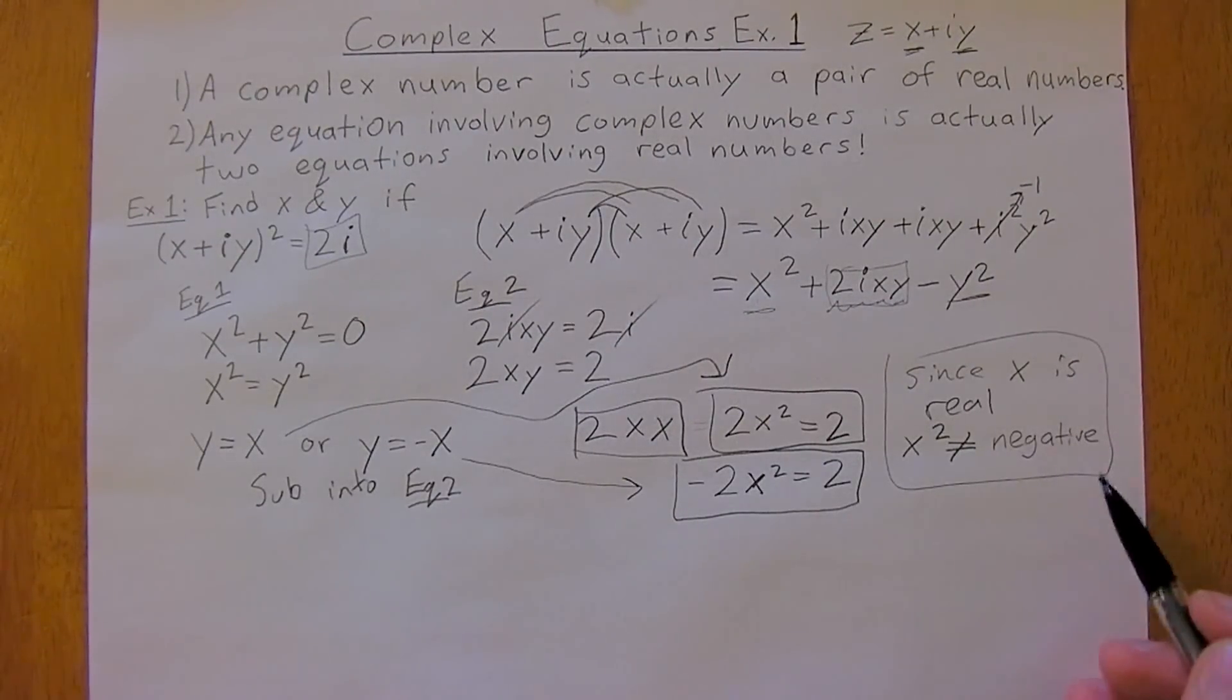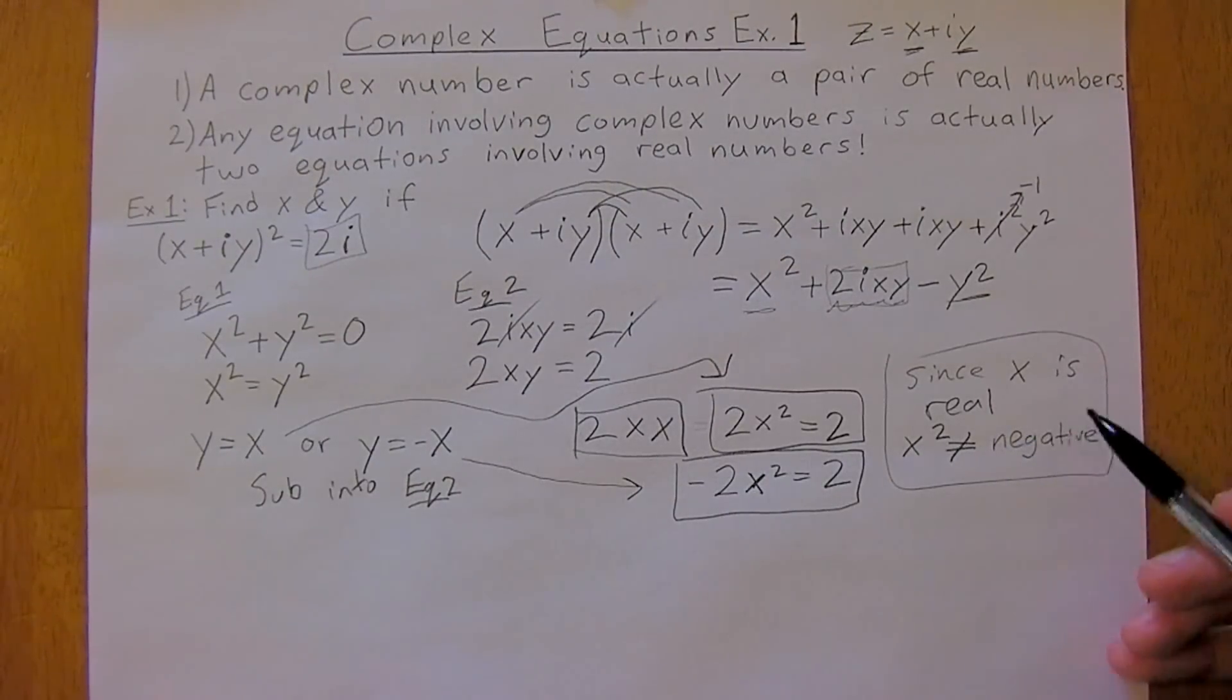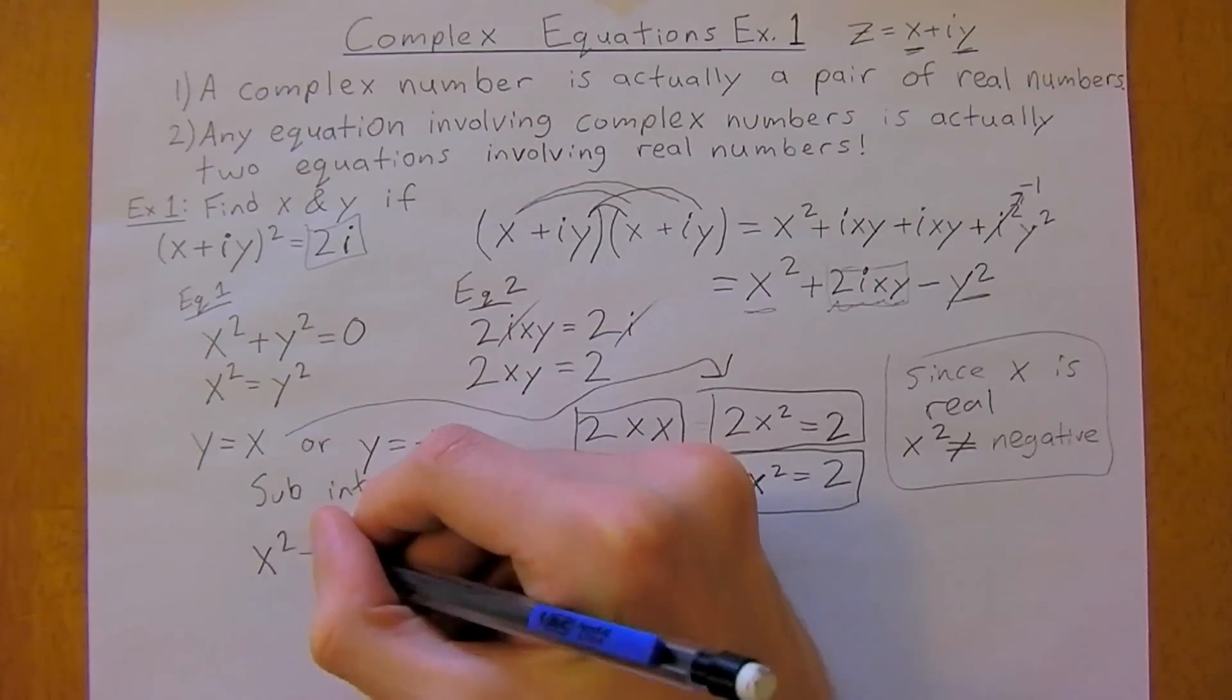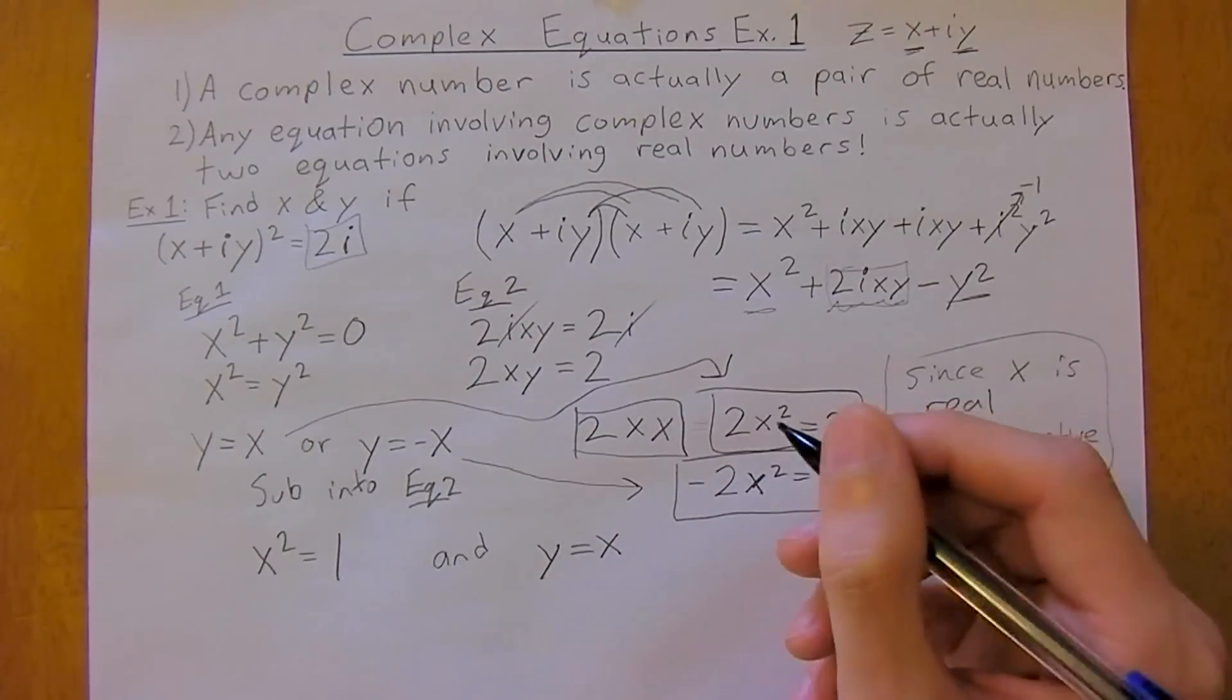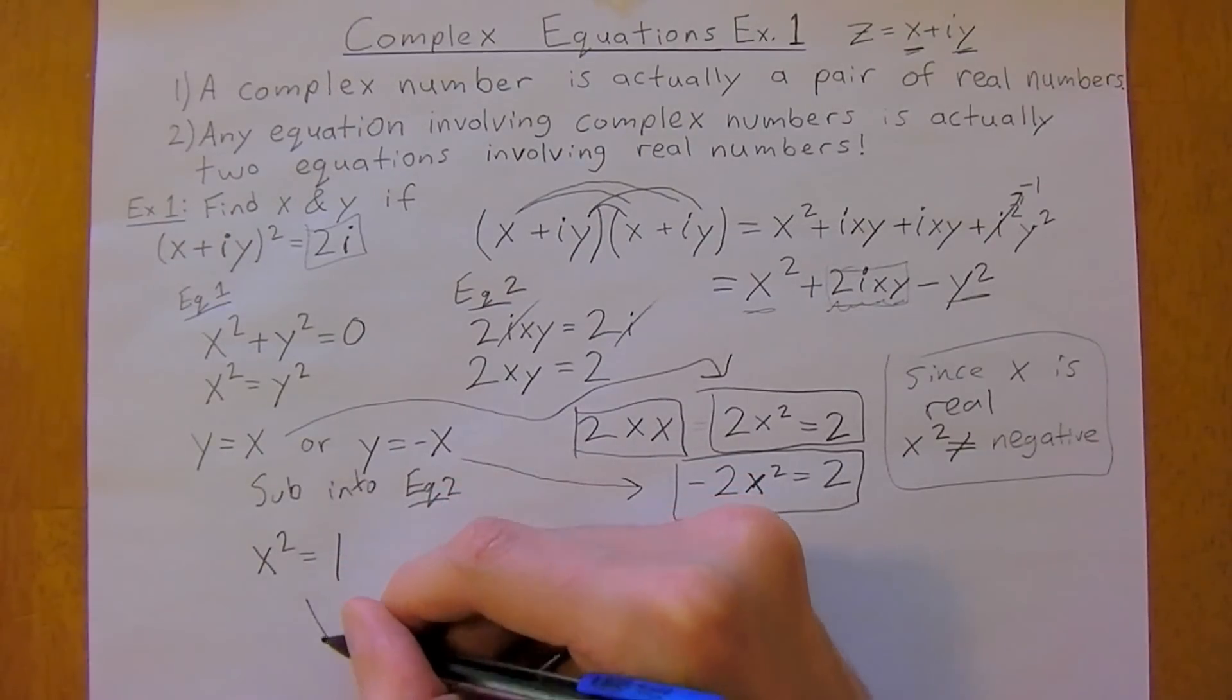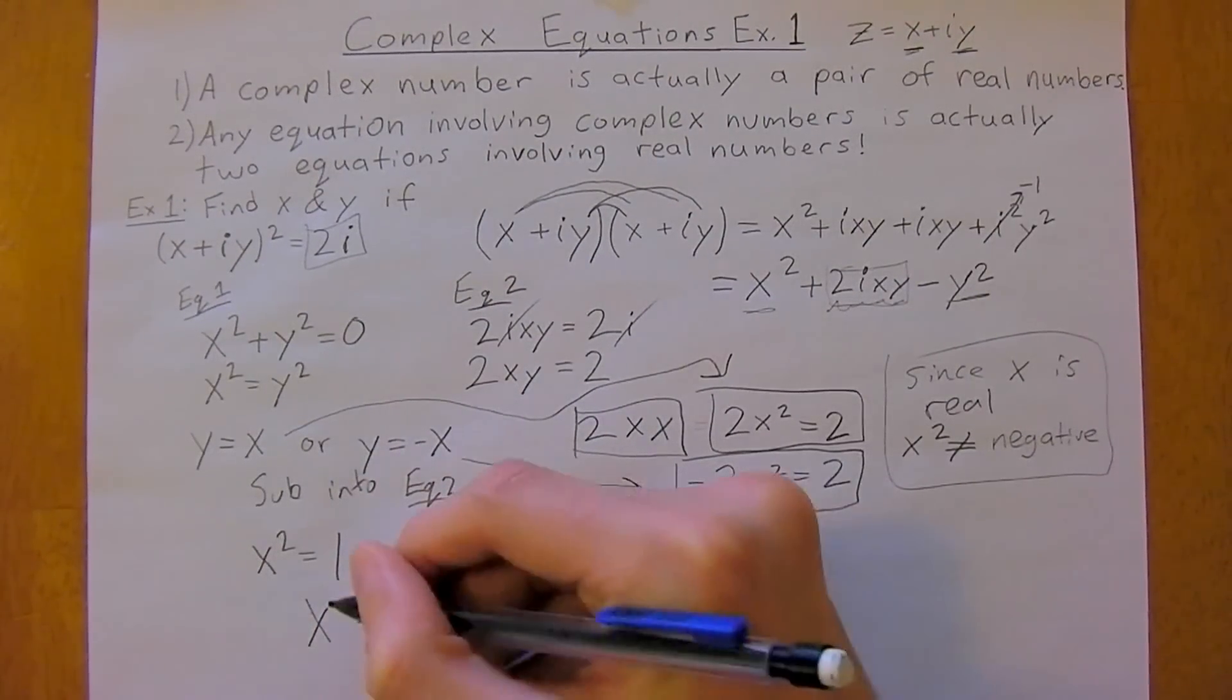X is definitely real, so we cannot have a square root of a negative number. Therefore, x squared can't be negative. This leads us to the understanding that x squared equals 1, and y equals x. Therefore, x equals y equals 1.